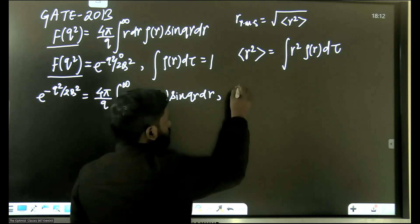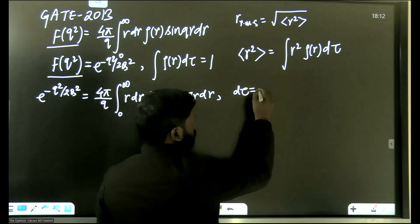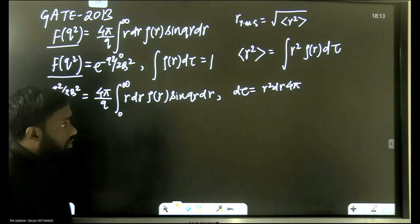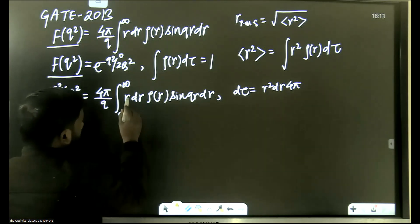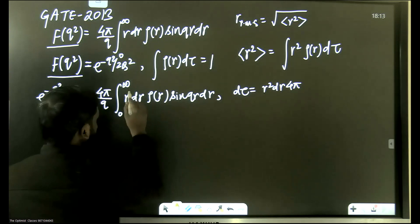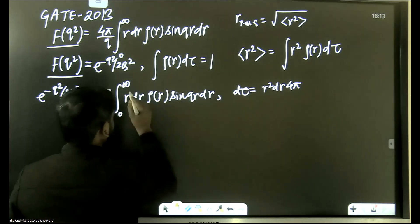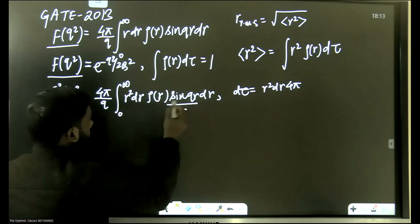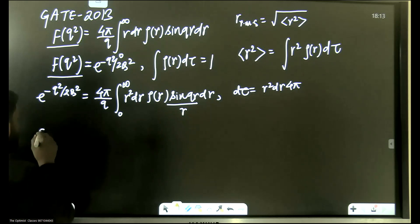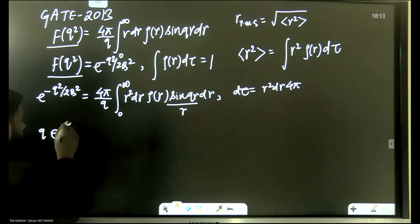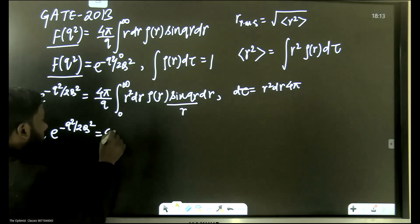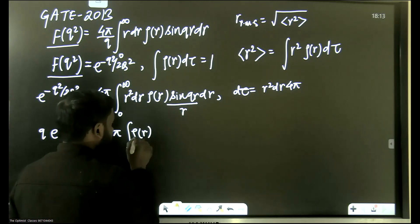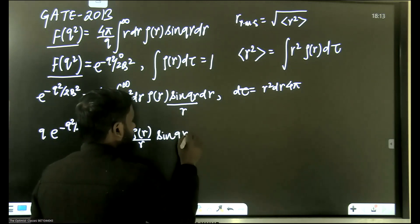We know that in a spherically symmetric situation, the volume element dτ equals r²·dr·4π, where the 4π comes from the sine theta and phi integration. So we see we have 4π and r·dr, but we need r² to make it dτ. So we multiply by r and divide by r accordingly, making 4π·r²·dr equal to dτ.